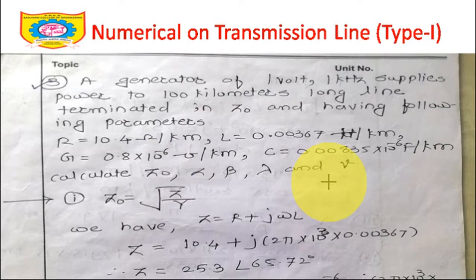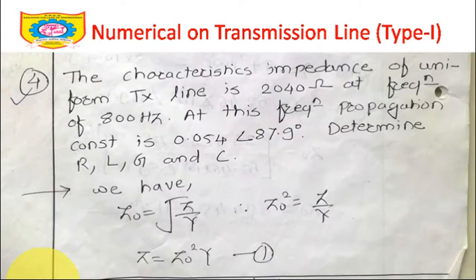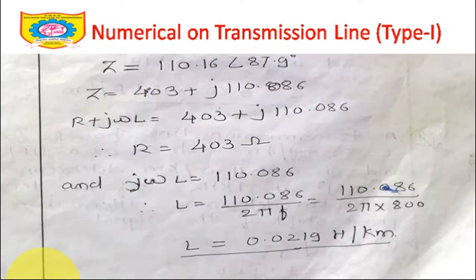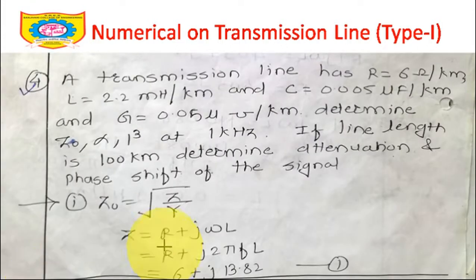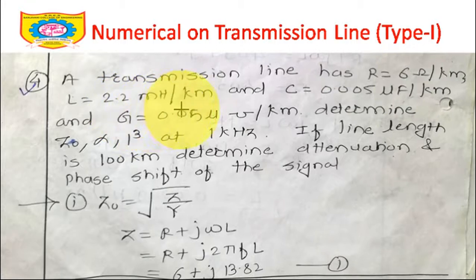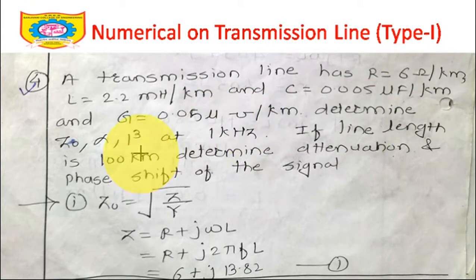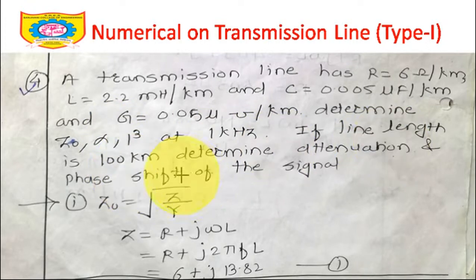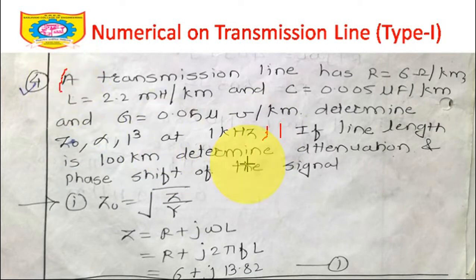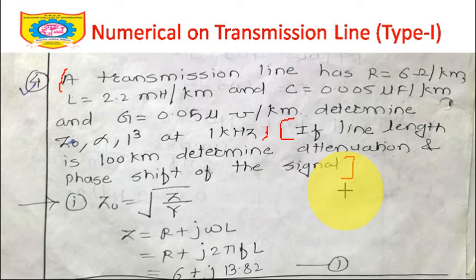That completes the Type 1 problem where primary constants were given and secondary constants were calculated. For a second numerical: a transmission line has R = 6 ohm/km, L = 2.2 mH/km, C = 0.05 μF/km, G = 0.05 μmho/km. Determine Z0, alpha, and beta at 1 kHz. If the line length is 100 km, determine the attenuation and phase shift of the signal — we will solve that in the next lecture. Thank you and happy learning.